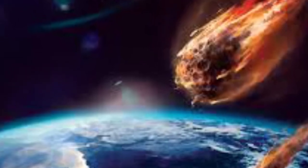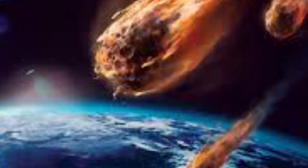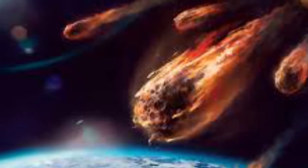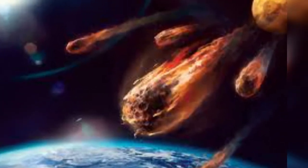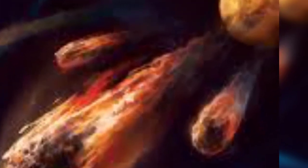Asteroid 2019 SX5, having a size comparable to the Great Pyramid of Giza, flew past Earth on October 10th. CNEOS is tracking the asteroid's size, speed, and orbit.